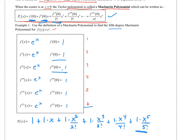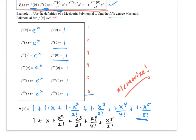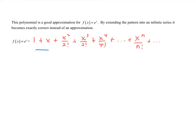We can clean that up a little. This one has to be memorized — you have to know that e to the x is approximately this fifth degree polynomial. If I write this out as a continuing pattern that goes on forever, this is exactly what e to the x is, so I can put an equal sign. When I only did the fifth degree, I needed to write an approximation sign, because that was short of all the terms needed. Be careful with your equal signs.